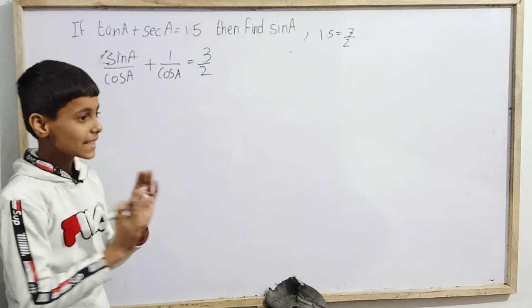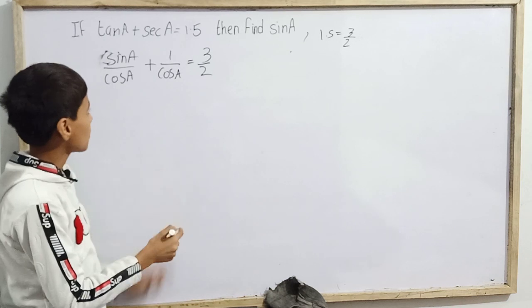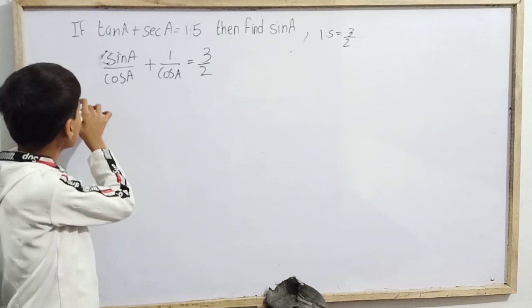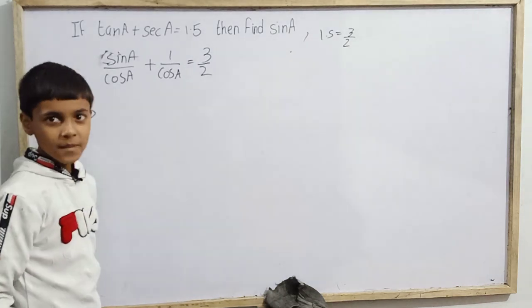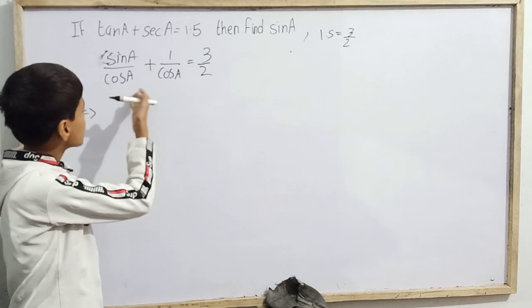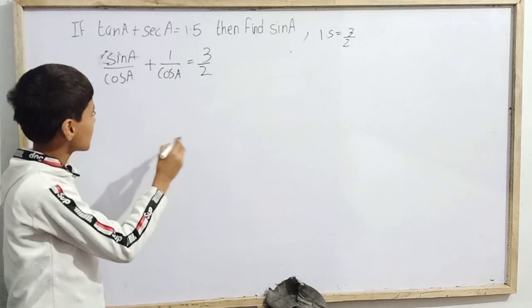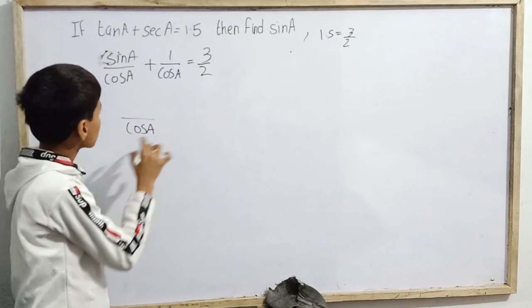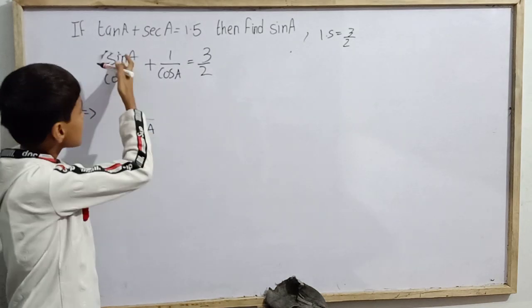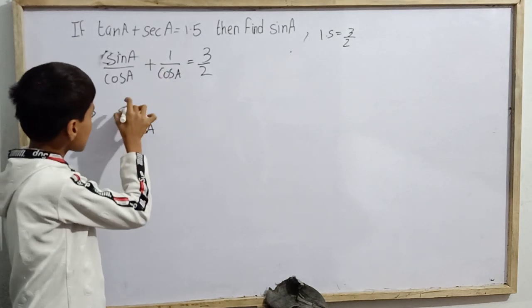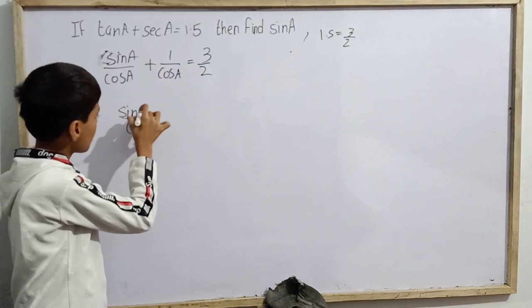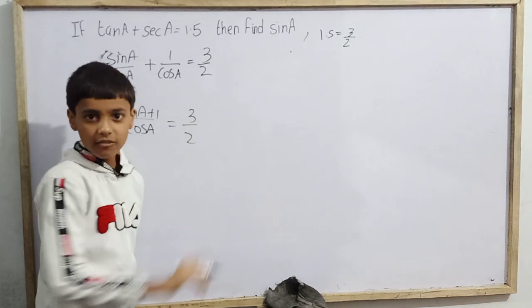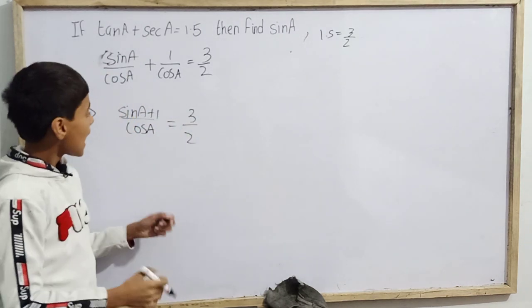Now, since both terms on the left have the same denominator cos(a), we can combine them. Taking cos(a) as the common denominator, we get (sin(a) + 1)/cos(a) = 3/2.